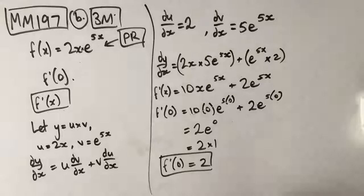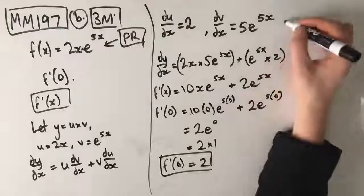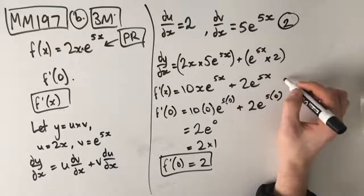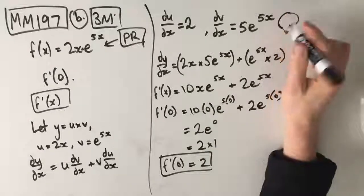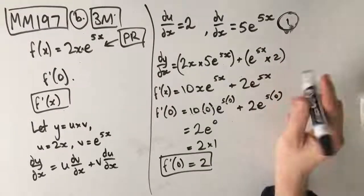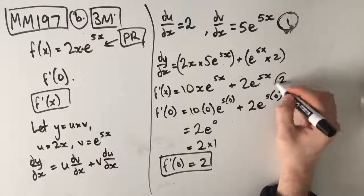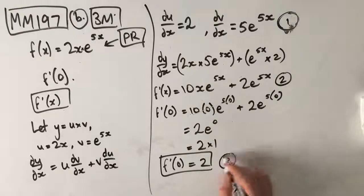Now, this is a 3 mark question. So, your first mark comes by recognizing that it's a product rule and then beginning this process here. Your second mark comes when you get f dash of x and your third mark comes when you get f dash of 0.